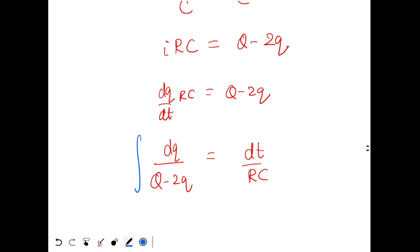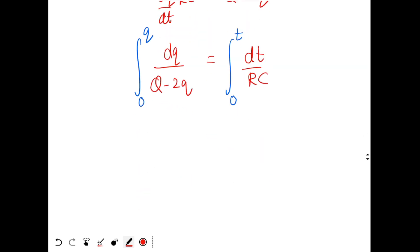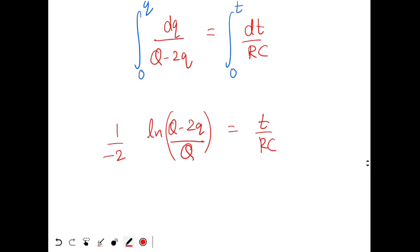So now I need to integrate. At time t equal to 0, the value of small q was 0. At time t, the small q has value Q. So this will give me on integration, natural logarithm of Q minus 2Q divided by Q, divided by the coefficient of small q that is minus 2. And this is equal to t by RC. So Q minus 2Q by capital Q equals e power minus 2T by RC.